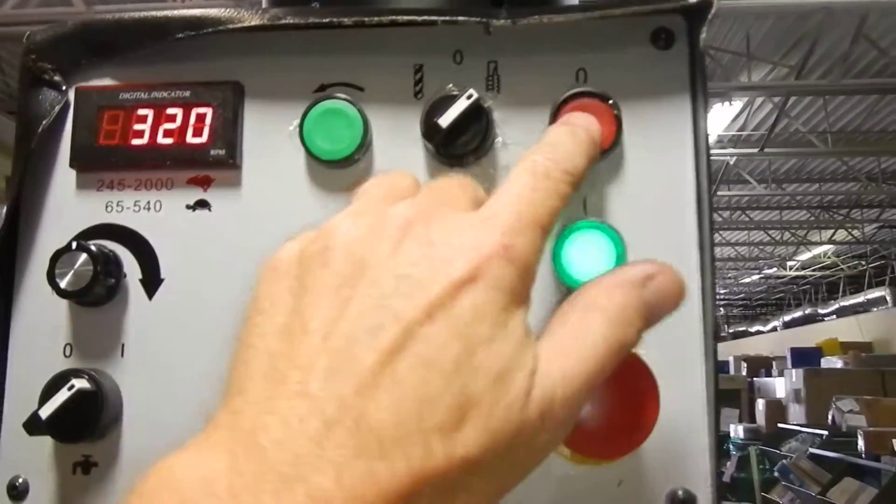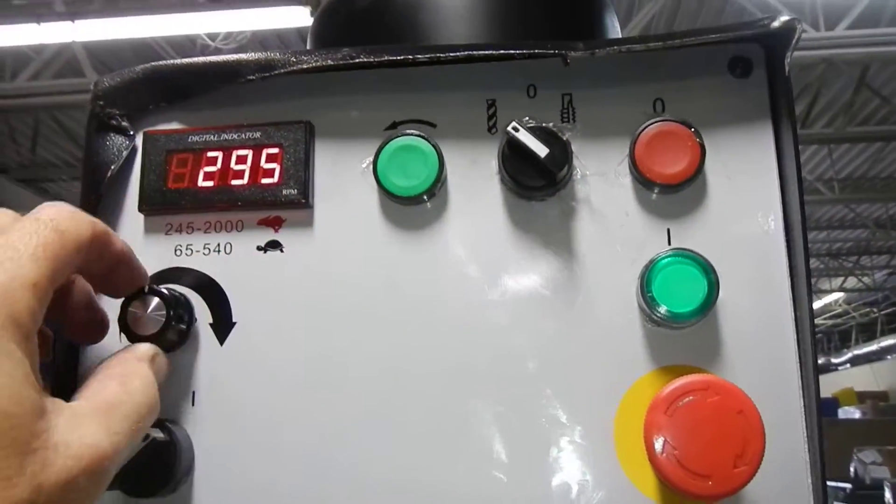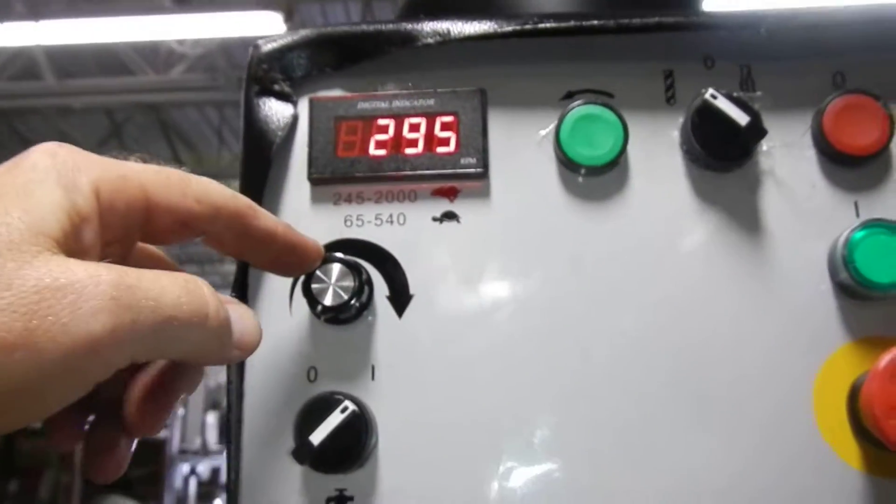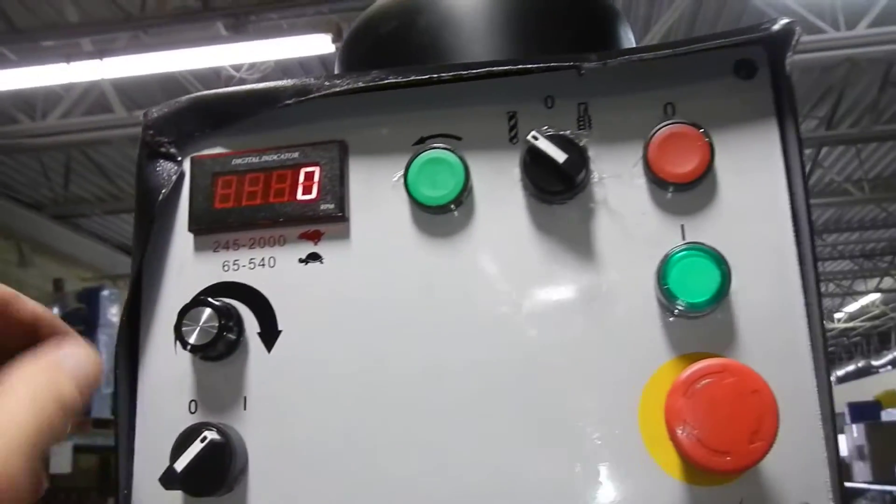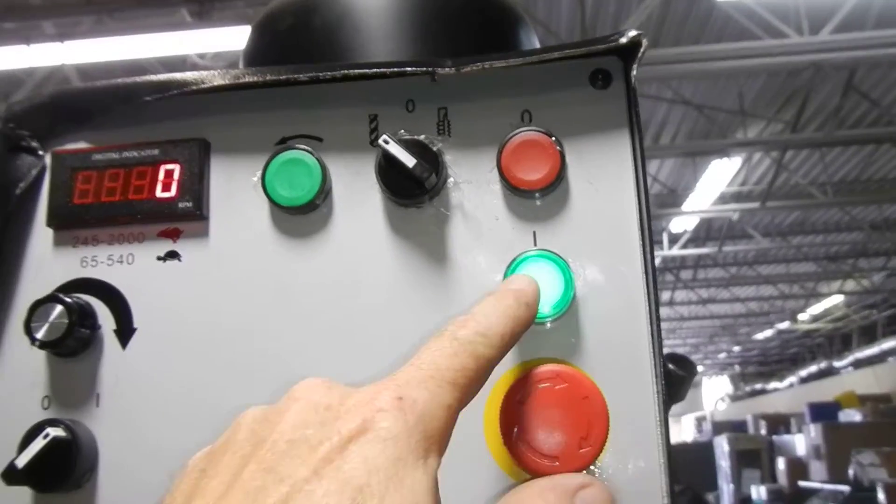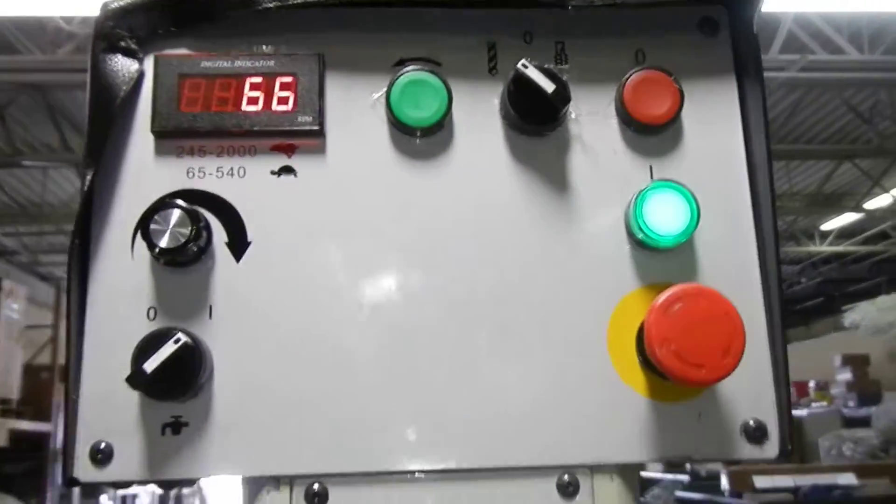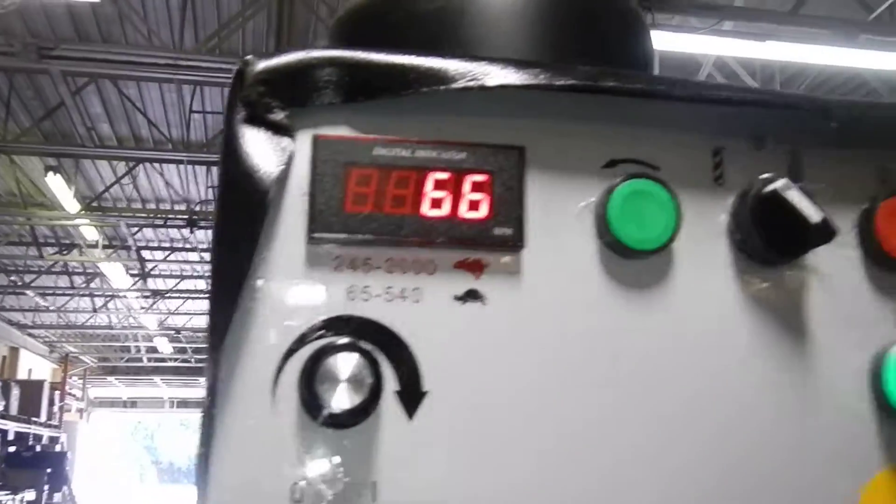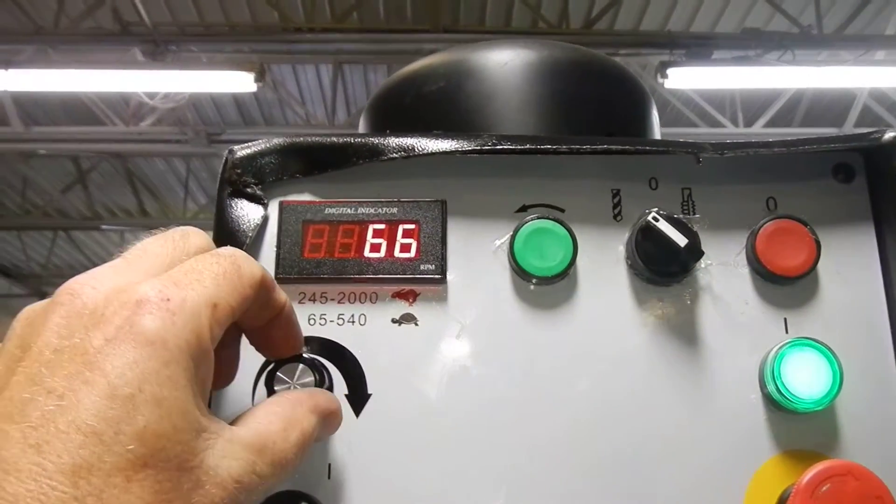We're going to stop the machine. We're going to switch it over to drilling mode. I'm going to turn the variable speed all the way down. Turn it back on. Now it's at about 66 RPM, 65, 66.